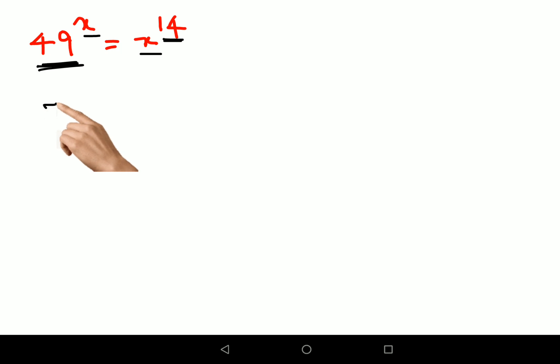Let's do that. So this is going to become 7 raised to 2 the whole raised to x, and here you have x raised to 7 into 2. I hope you all have understood till here.